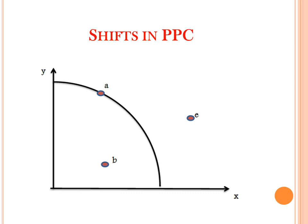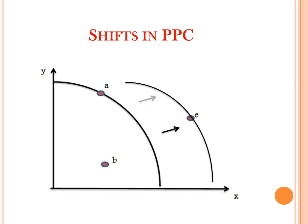It could be through technological progress. Economic growth, technological progress, or an increase in resources all lead to an upward shift in the production possibility curve. This reflects an increase in the ability of society to produce more of all products.